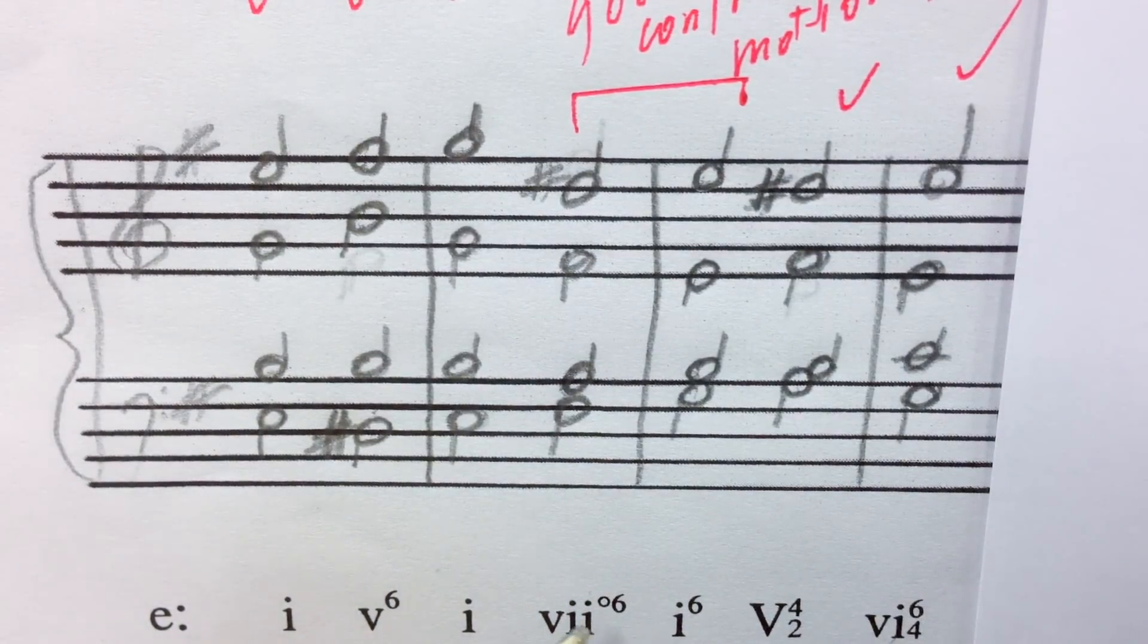And therefore, the raised superscript degree symbol. A diminished triad has a minor third from its root to its third. And there you have your D5.